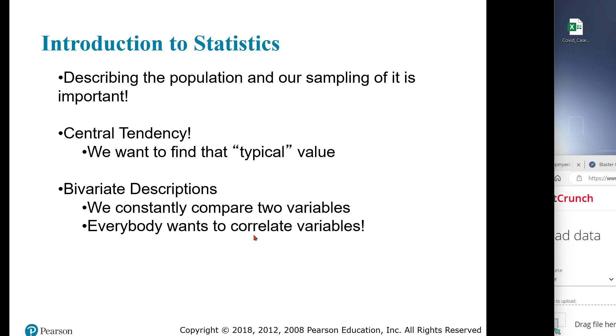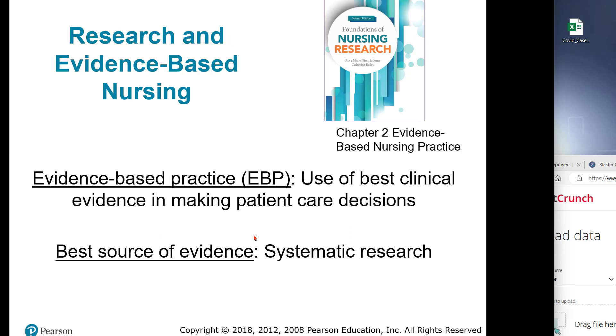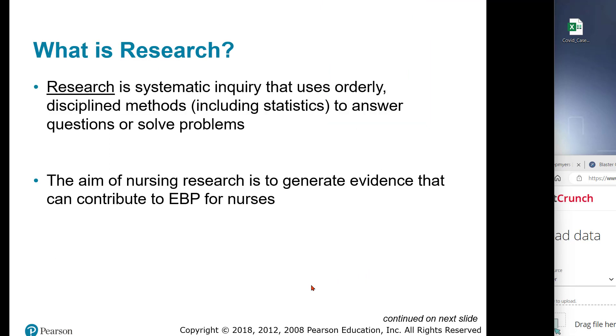In nursing, we talk a lot about evidence-based practice. We want to have the best evidence to make decisions, and to do that we need systematic research. We must be very careful as clinicians and researchers. When we do research, it's all about an inquiry. It's systematic, we do it to answer a question or solve a problem. We want to generate research data because we want to use an evidence-based approach that is as reliable as we can make it. We want the best outcome for our patients.